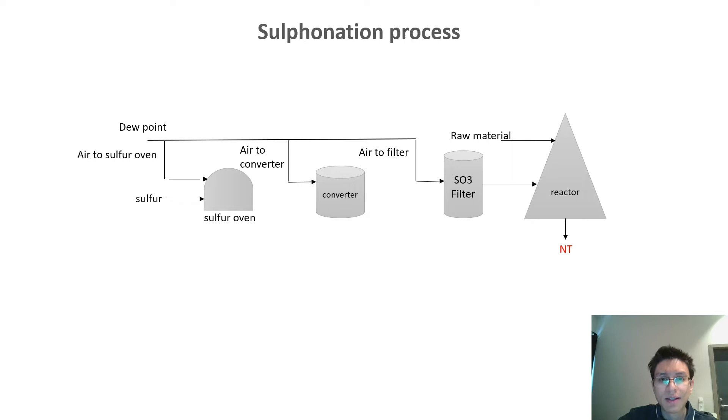This is a diagram of the overall sulfonation process to generate the surfactants. Here we have different components such as the sulfur oven, a converter, filters, and a reactor. And each of these components have some inputs. For example, the amount of air injected to the converter, the amount of air injected to the filter, the amount of raw material, and so on.